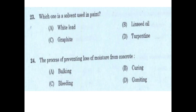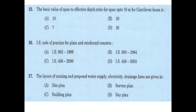Which one is a solvent used in paint? The answer is turpentine. The process of preventing loss of moisture from concrete is called curing.